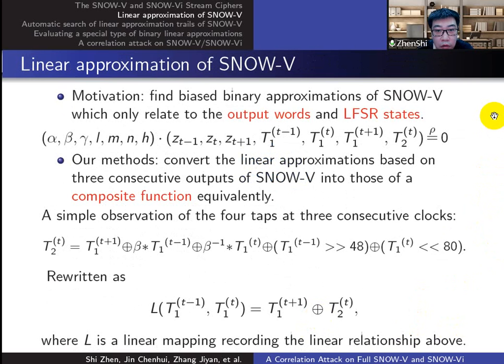Now we introduce our way to construct the correlation attack distinguisher. Our motivation is to find a biased binary approximation of this form, a distinguisher only relating to the output words and LFSR states. The method is to convert the linear approximation equation into the approximation of a composite function.